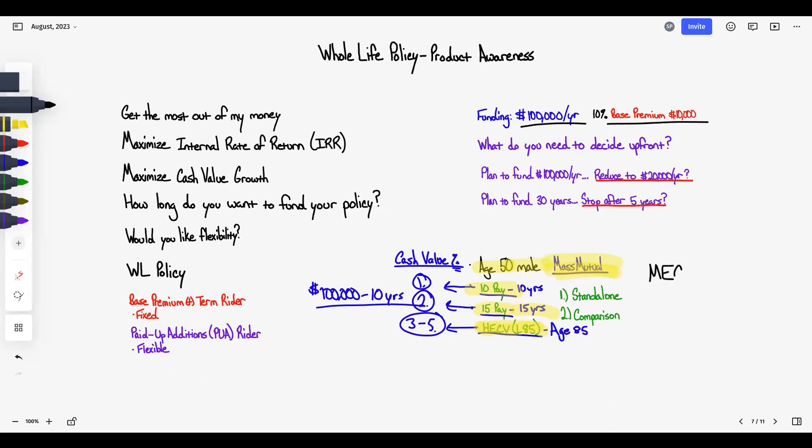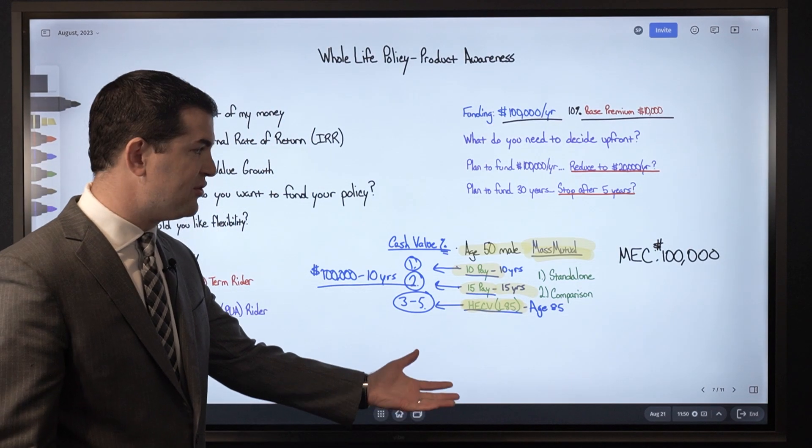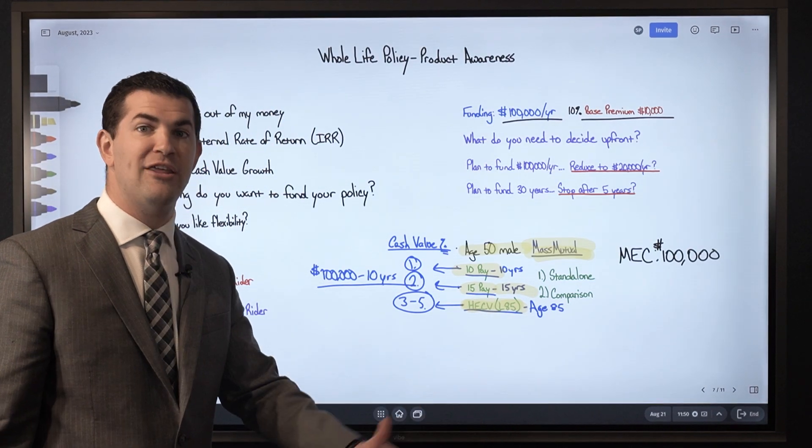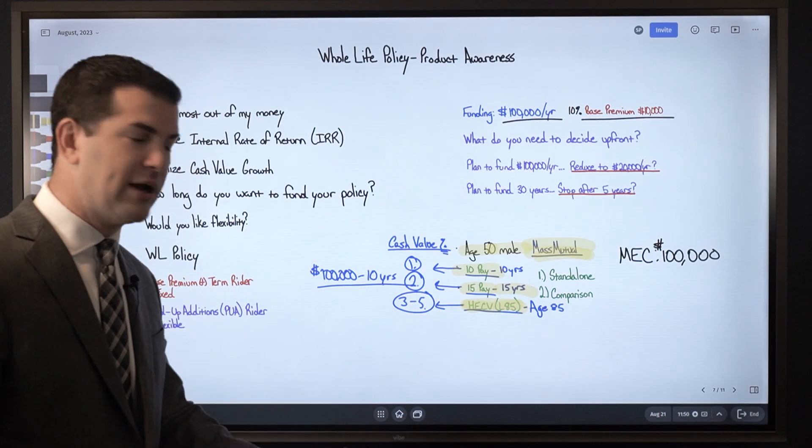that the MEC limit is at $100,000 for each of them - not the same death benefit, but the same MEC limit - unless the person expresses, if this is you, unless you express I want the same death benefit across the board, then we'll look at it that way.